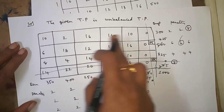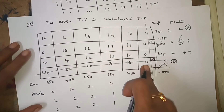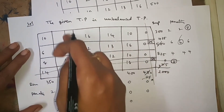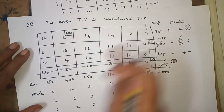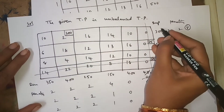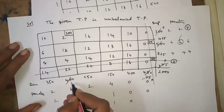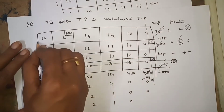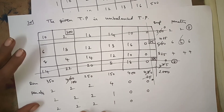Enter into the first row. In the first row, the least cost element is 2. See the corresponding demand: 400, supply: 300. Which one is minimum? 300. I allocate 300, remaining demand becomes 400 minus 300 = 100. Supply becomes 0, so cancel this entire row. Find penalties again.